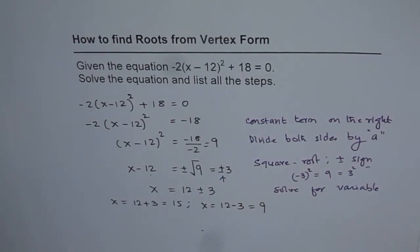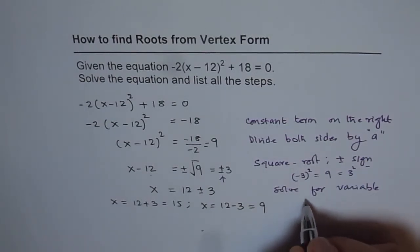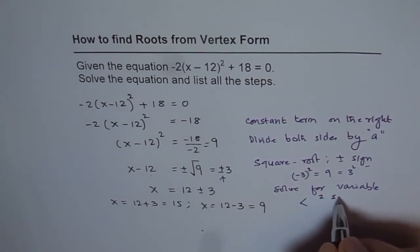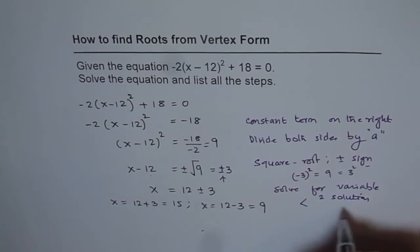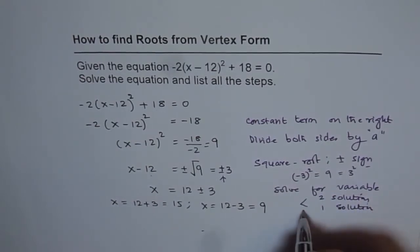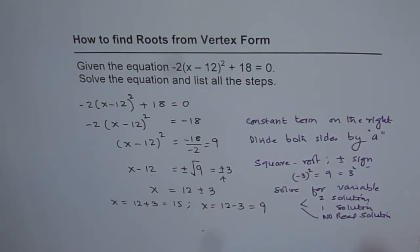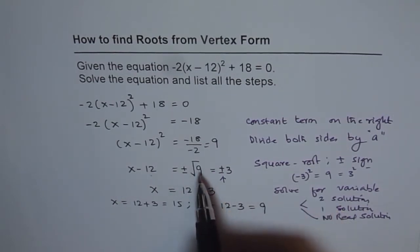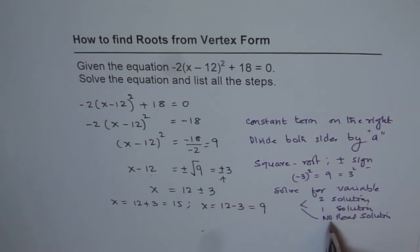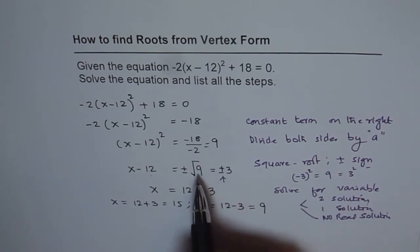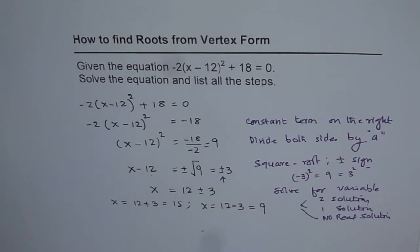Whenever you do these kinds of questions, you may actually get two solutions, one solution, or no real solution. You may get two solutions as we got here, or one solution—sometimes the square root will be 0—or no real solutions if it's negative. Look for all the kinds of solutions and then clearly write down your answer.